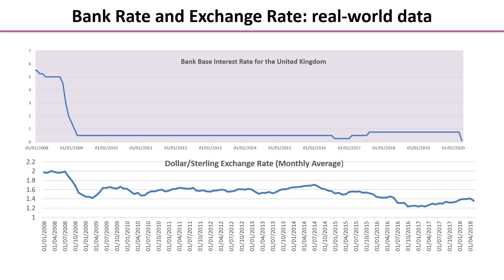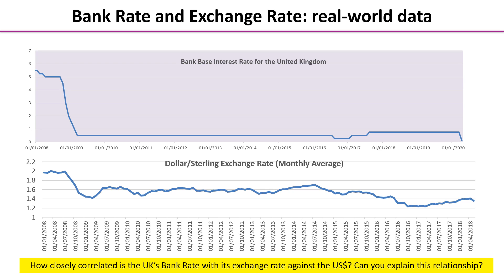Now we're going to have a look at some real world data. The top graph shows the Bank Base Rate for the UK — we can see the effect of the financial crisis in 2008 and the subsequent very low interest rates since then. The bottom graph shows the dollar-sterling exchange rate as a monthly average. Think about how closely related the UK's bank rate is with the exchange rate against the dollar, and whether you can explain that relationship.